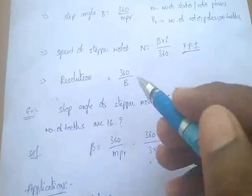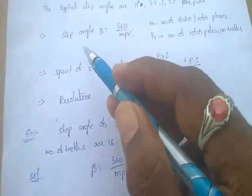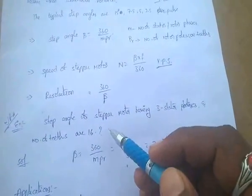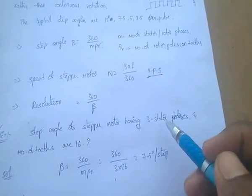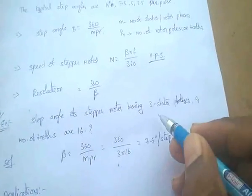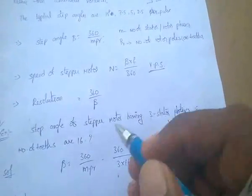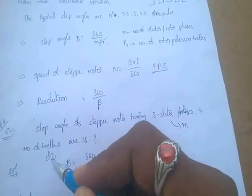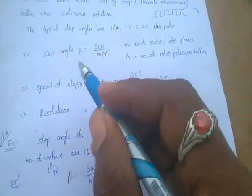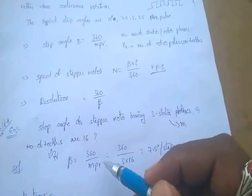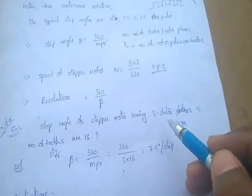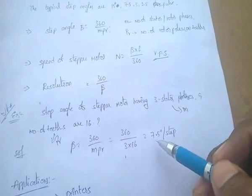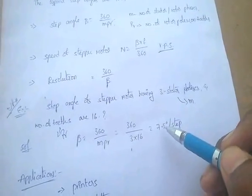The resolution of the stepper motor is 360 / beta. Example problem: find the step angle of a stepper motor having three stator phases and 16 teeth. Using beta = 360 / (M × PR) = 360 / (3 × 16) = 7.5 degrees per step. That means the stepper motor rotates 7.5 degrees for every step.